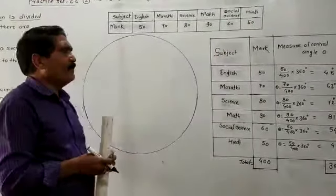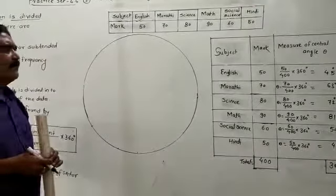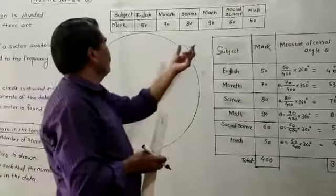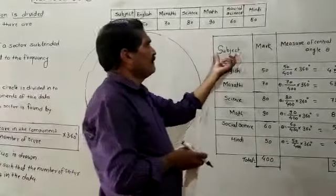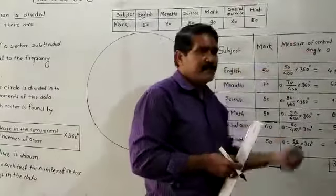From that data, you have to prepare the pie chart. For that, you have to prepare a table with columns: Subject, Marks, and Central Angle.